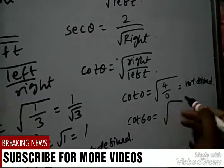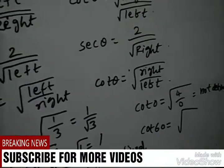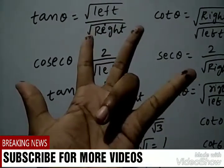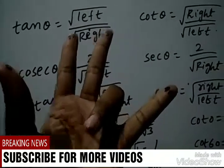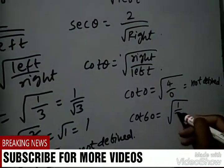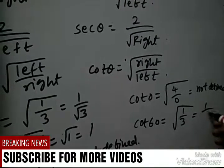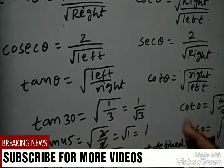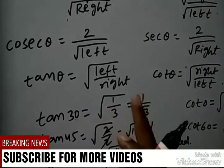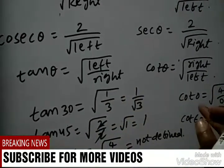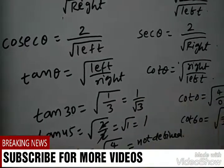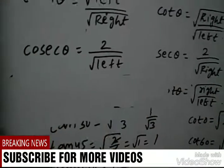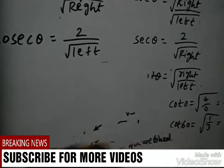For cot 60, fold at 60 degrees. Cot formula is root right by left. Right side has 1 finger, left side has 3, so square root of 1 by 3, which equals 1 by root 3. This is cot 60. Like this we are finding tan and cot values within 2 seconds.